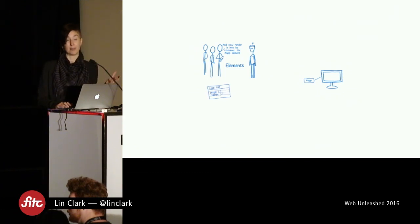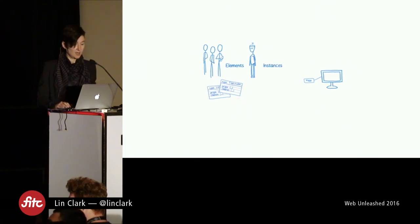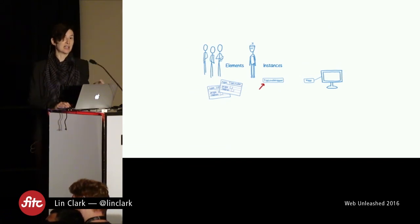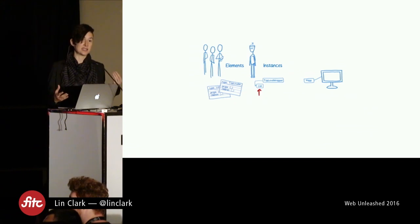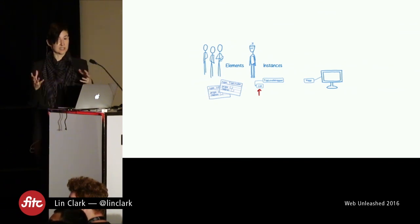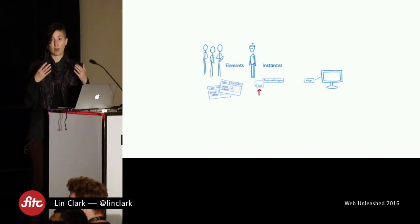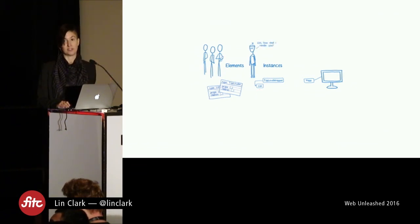React starts by creating a top-level wrapper — that's just an implementation detail that helps React group things together and is probably going away soon. It creates an instance for this top-level wrapper, wired up to render to the list element we passed in. Then React creates an instance of the list, sets the props and state on it, and wants to create the corresponding DOM. But since list is a component we wrote, it doesn't know — so it has to ask the component using render.